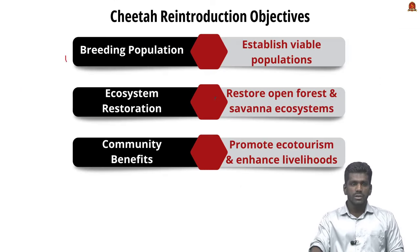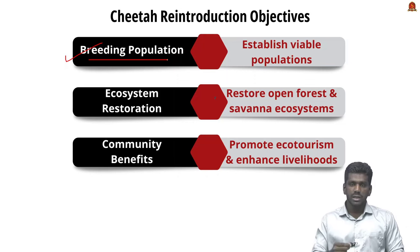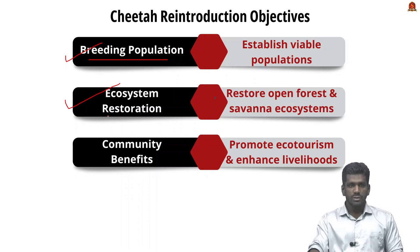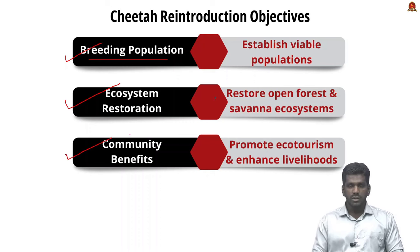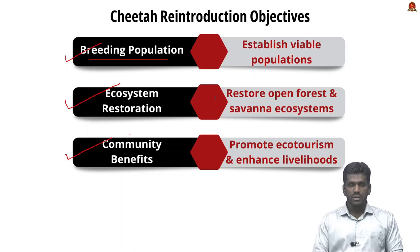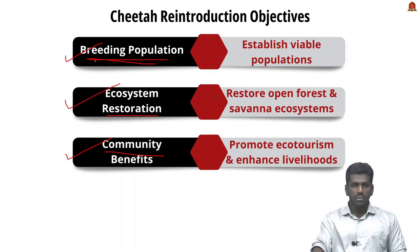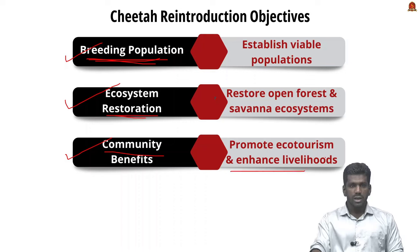There are three main objectives of reintroducing cheetah. First, to establish a viable and stable breeding population in central India, their historical range. Second, to restore open forest and savannah ecosystems — restoring the grassland ecosystem and degraded forest. Third, community benefits: the reintroduction of cheetah promotes ecotourism and enhances the livelihoods of local communities.